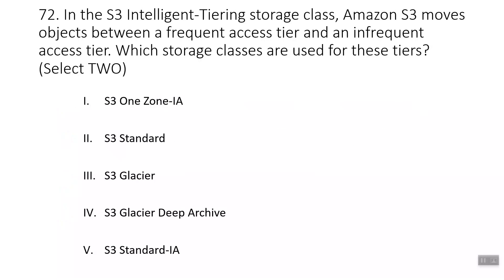Question seventy-two: in the S3 Intelligent-Tiering storage class, Amazon S3 moves objects between a frequent access tier and an infrequent access tier. Which storage classes are used for these tiers? The correct options are S3 Standard and S3 Standard-IA. If an object is not accessed for 30 days, it is moved to the infrequent access tier (S3 Standard-IA). If accessed again, it automatically moves back to the frequent access tier (S3 Standard).